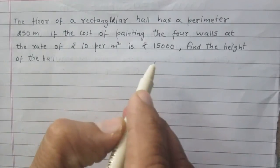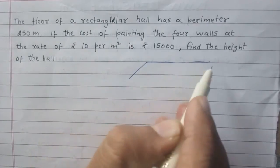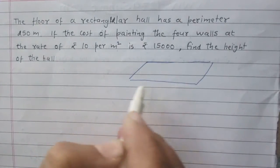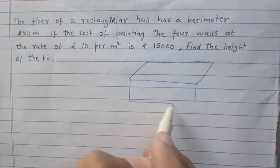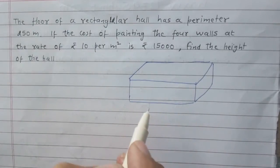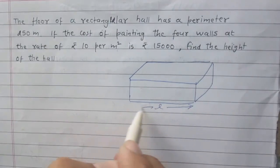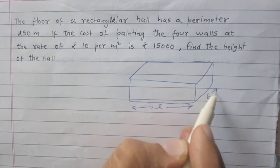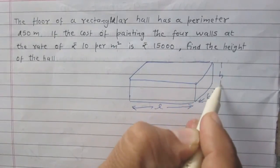Let us understand with the help of this diagram. We will consider this as a rectangular hall. Let L be the length of the rectangular hall, B stands for the breadth of the rectangular hall, and H is for height.